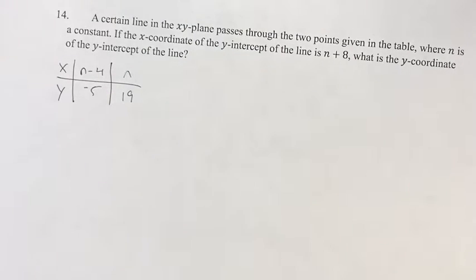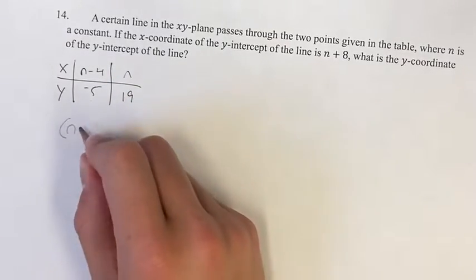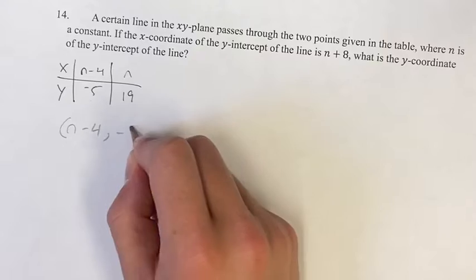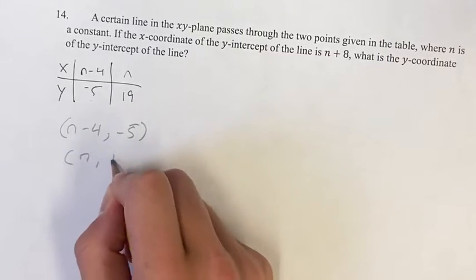In this problem, we have a certain line in the xy-plane which is passing through these two points. Let me write them out in a little bit more clear fashion. It's going through (n-4, -5) and (n, 19).